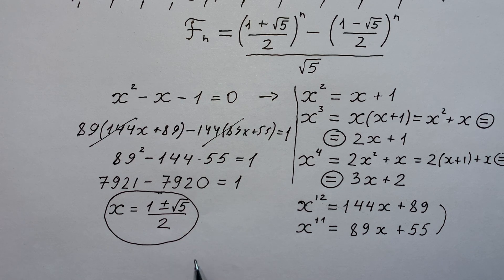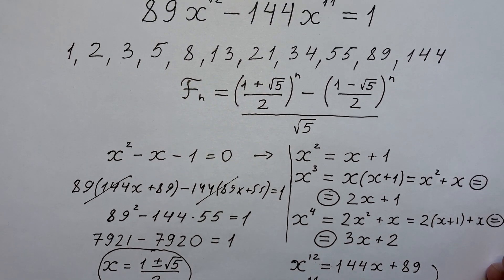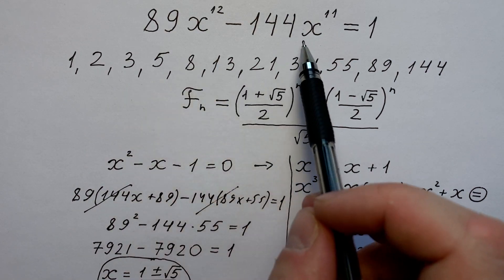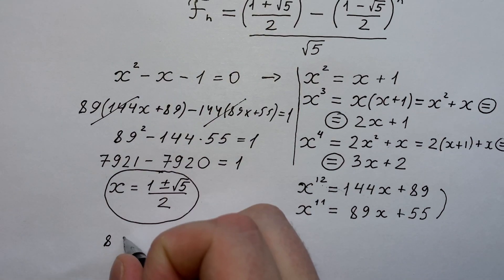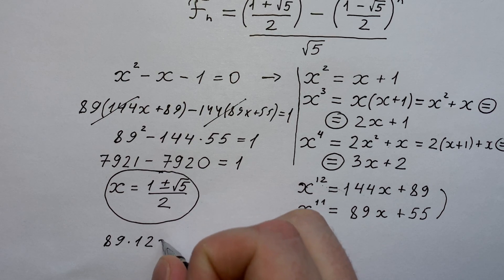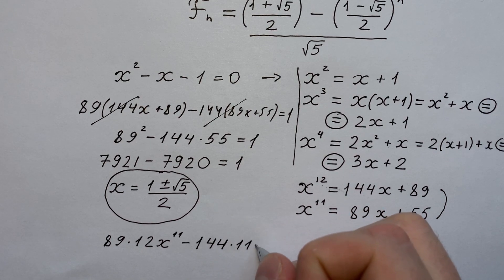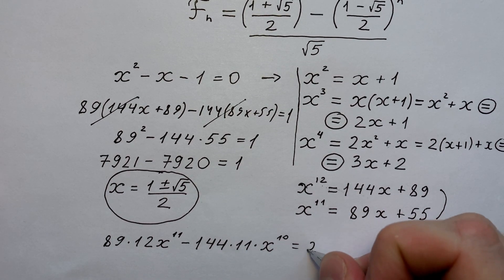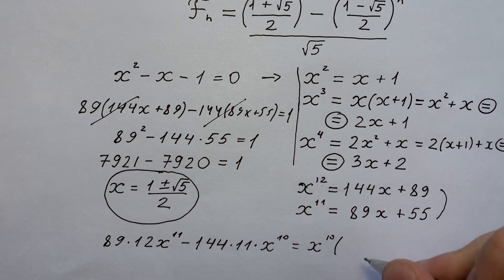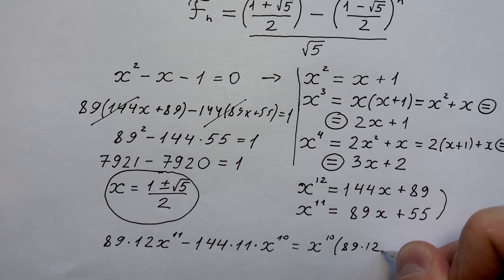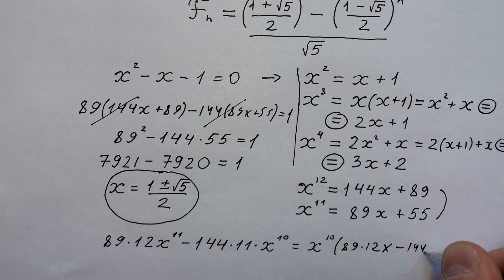But guys, one question remains, and this question is on everyone's mind: are there any other roots here? Apparently not. Because if we take the derivative of the function in the left side of our equation, we're going to have 89 times 12 times x to the power of 11 minus 144 times 11 times x to the power of 10, which equals x to the power of 10 times (89 times 12x minus 144 times 11).